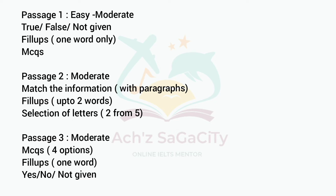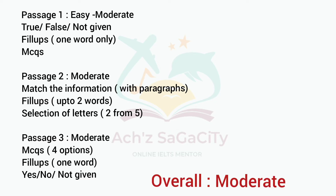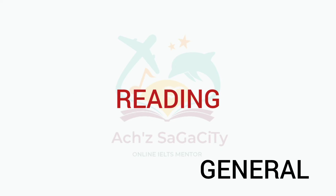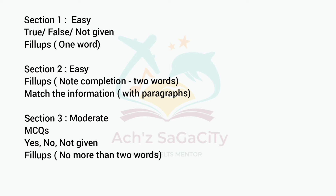Regarding the last passage, this will be a repeated passage at a moderate level. You can expect MCQs with four options, fill-up type of questions with one word only, note completion, and Yes/No/Not Given type of questions. This passage will be related to science, invention, ancient history, and similar topics. Overall, the academic reading is at a moderate level. You will get more materials related to past question papers on our Facebook page.